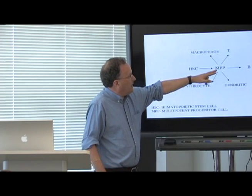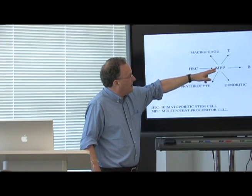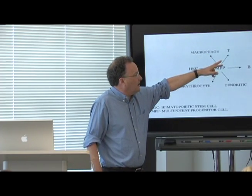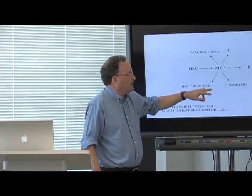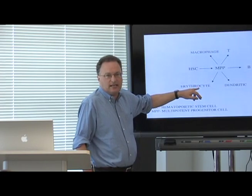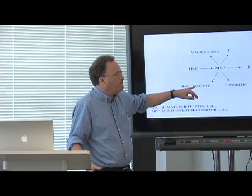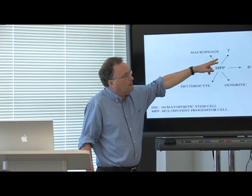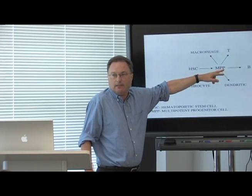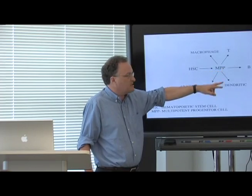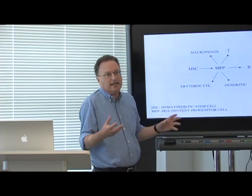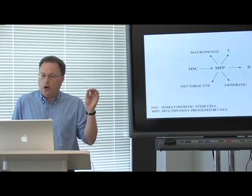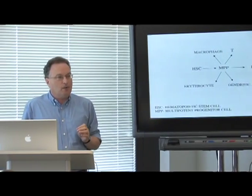From the MPP, cells can differentiate into a macrophage, a T cell, a B cell, a dendritic cell, a red blood cell, and other cell types as well. T cells are involved in regulating the immune response. B cells make antibodies. Dendritic cells present antigen to T cells and B cells so they know they have to respond.